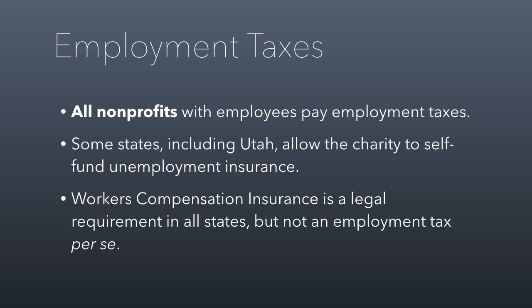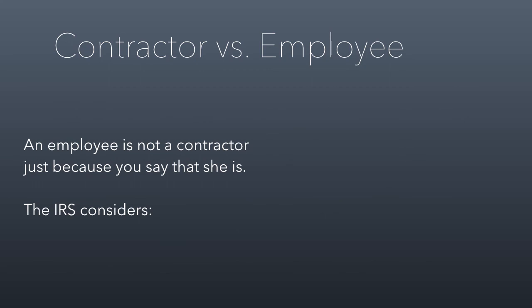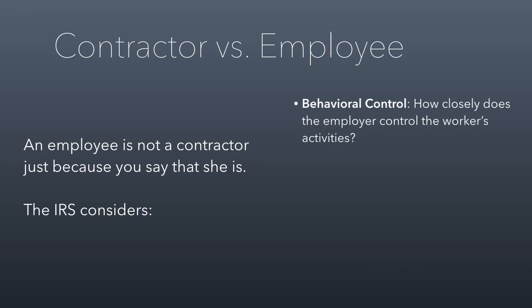An employee is not a contractor just because you say that she is. The IRS and state governments consider three principal factors to evaluate whether a person really is an employee. The first is behavioral control: how closely does the employer control the worker's activities? If you control their activities very closely, the odds are that person is an employee. Part of being an independent contractor is being independent — the employer says, I want this outcome, you go make it happen however your judgment tells you. With an employee, you say, do this today and do it this way. Where you have lots of control over their behavior, the IRS will consider them an employee.